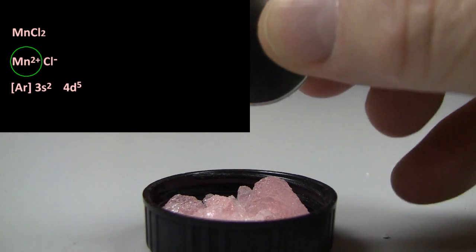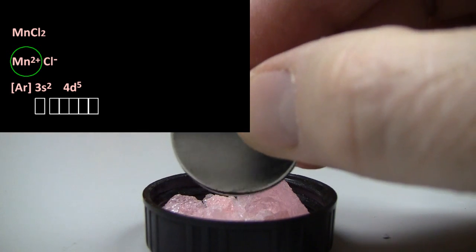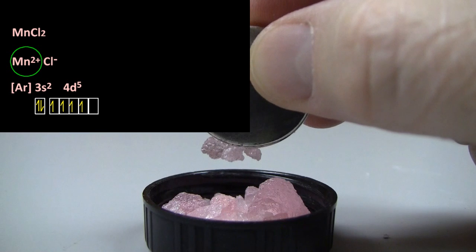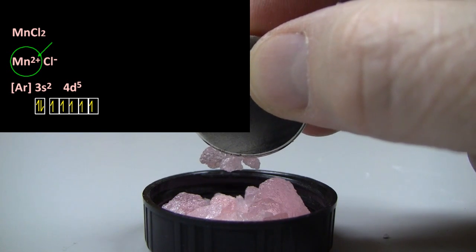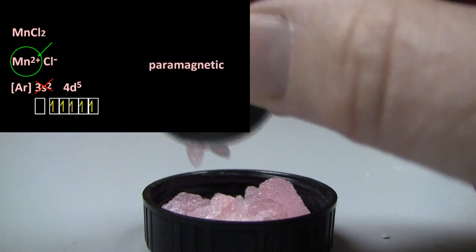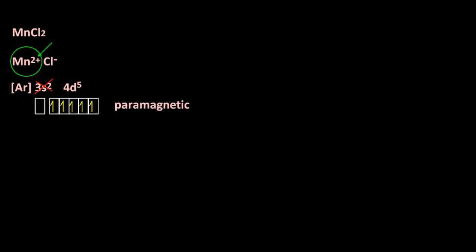Manganese two chloride. Well, look at that. It's slightly magnetic. Now, let me show you the electronic configuration for the manganese two plus ion. Oh yes, it's got lots of lone electrons there. So it's actually paramagnetic.